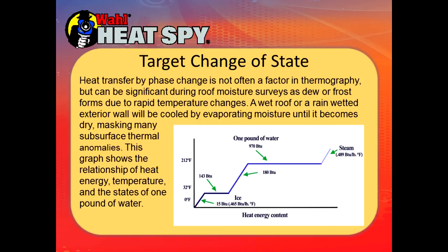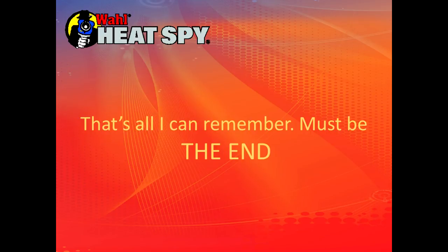Heat transfer by phase change is not often a factor in thermography but can be significant during roof moisture surveys, as dew or frost forms due to rapid temperature changes. A wet roof or rain-wetted exterior wall will be cooled by evaporating moisture until it becomes dry, masking many subsurface thermal anomalies. This graph shows the relationship between heat energy, temperature, and the states of one pound of water.